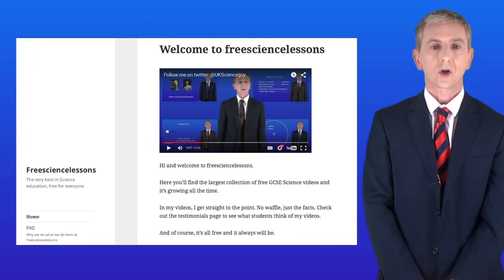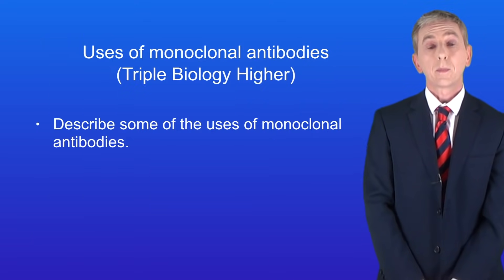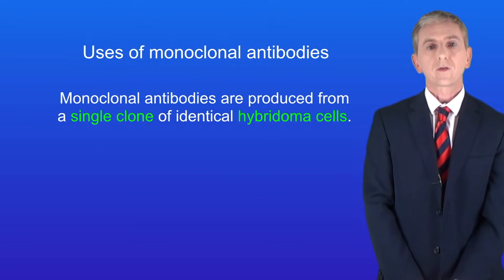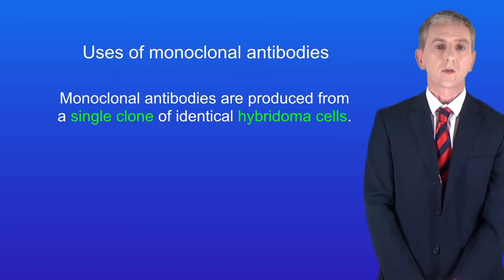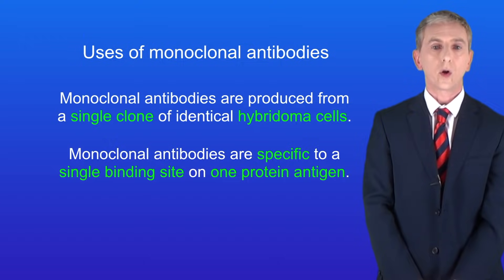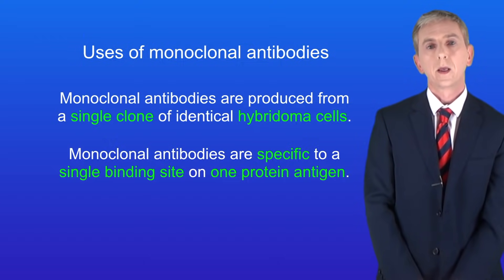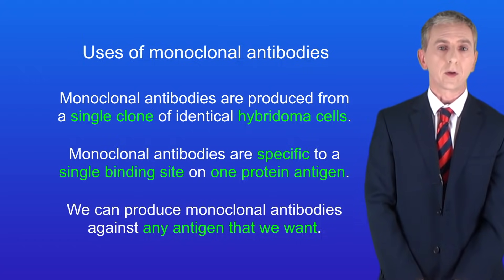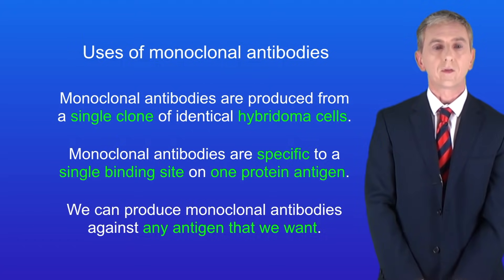Welcome back to freesizelessons.co.uk. By the end of this video you should be able to describe some of the uses of monoclonal antibodies. In the last video we saw that monoclonal antibodies are produced from a single clone of identical hybridoma cells, meaning they are specific to a single binding site on one protein antigen. We can produce monoclonal antibodies against any antigen that we want, making them extremely useful in medicine.